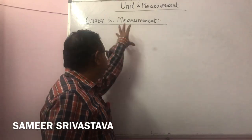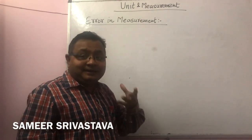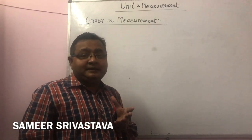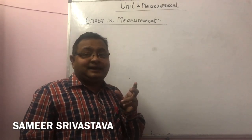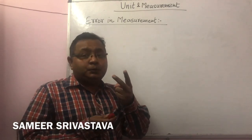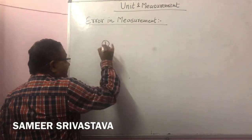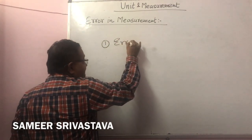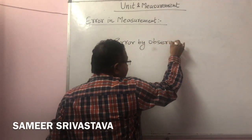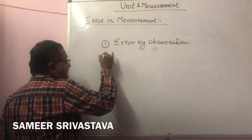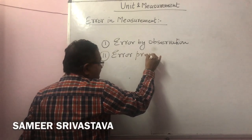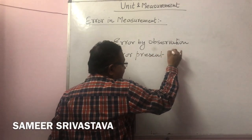How do you define the error? When is error generated? When we do some experiment, some measurement, error is generated by two ways: one way is Error by Observation, and the second is Error present in Instrument.